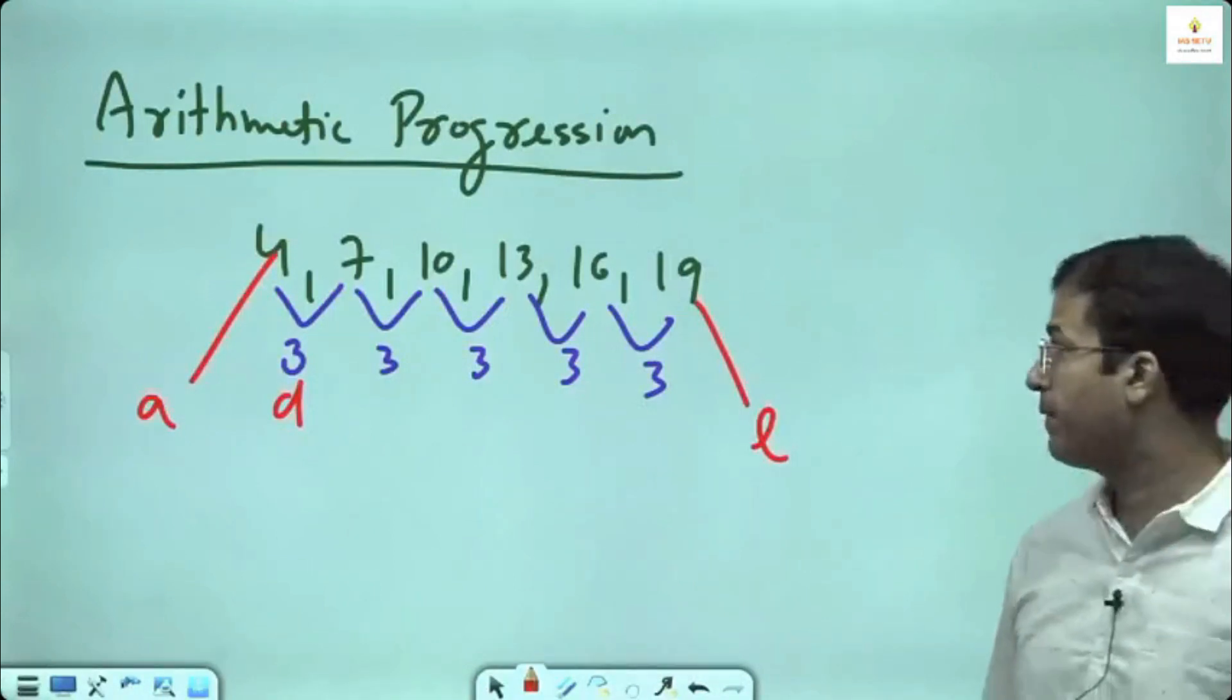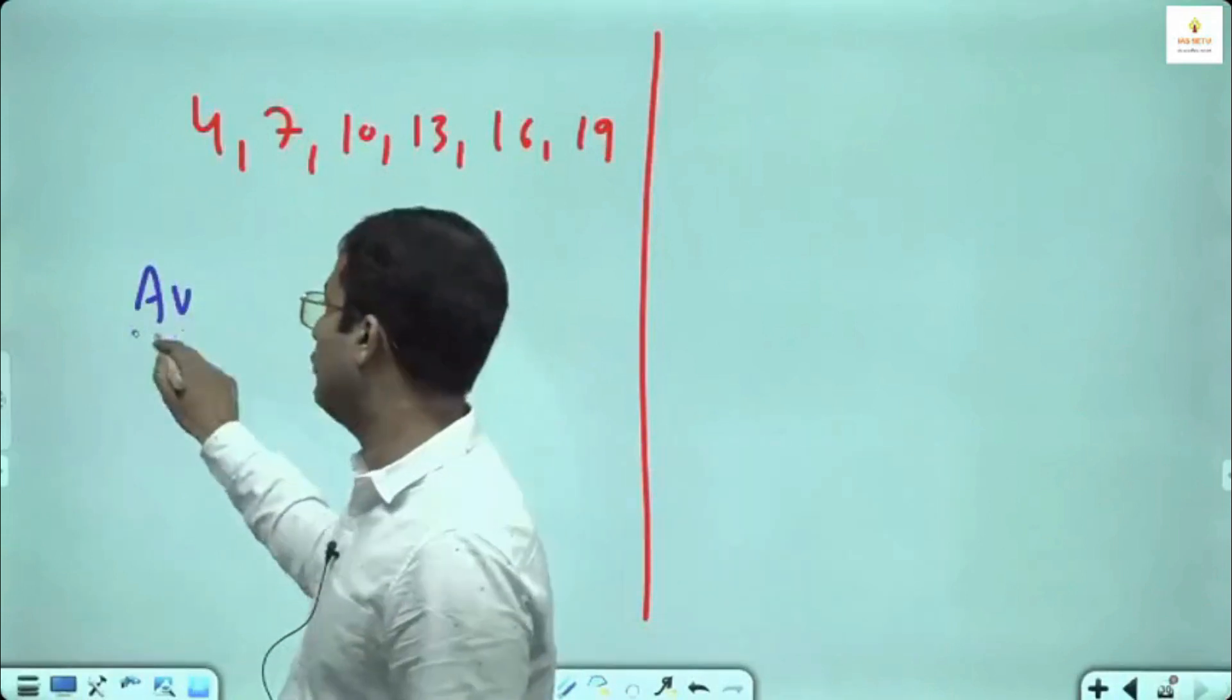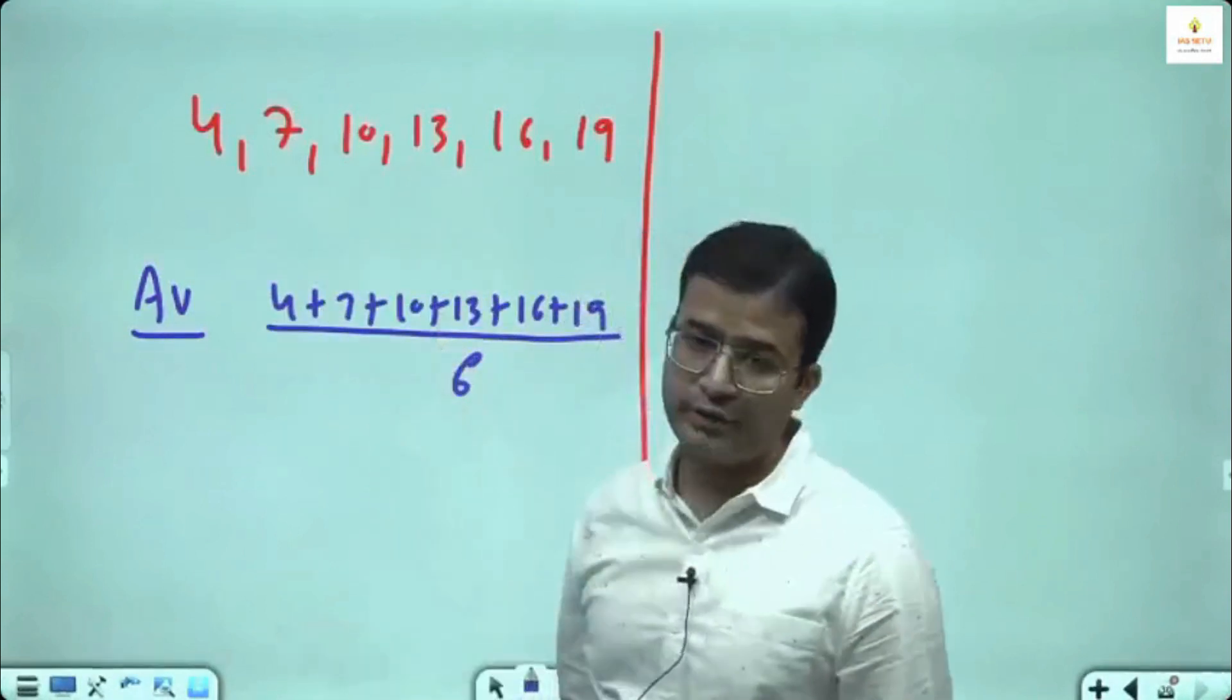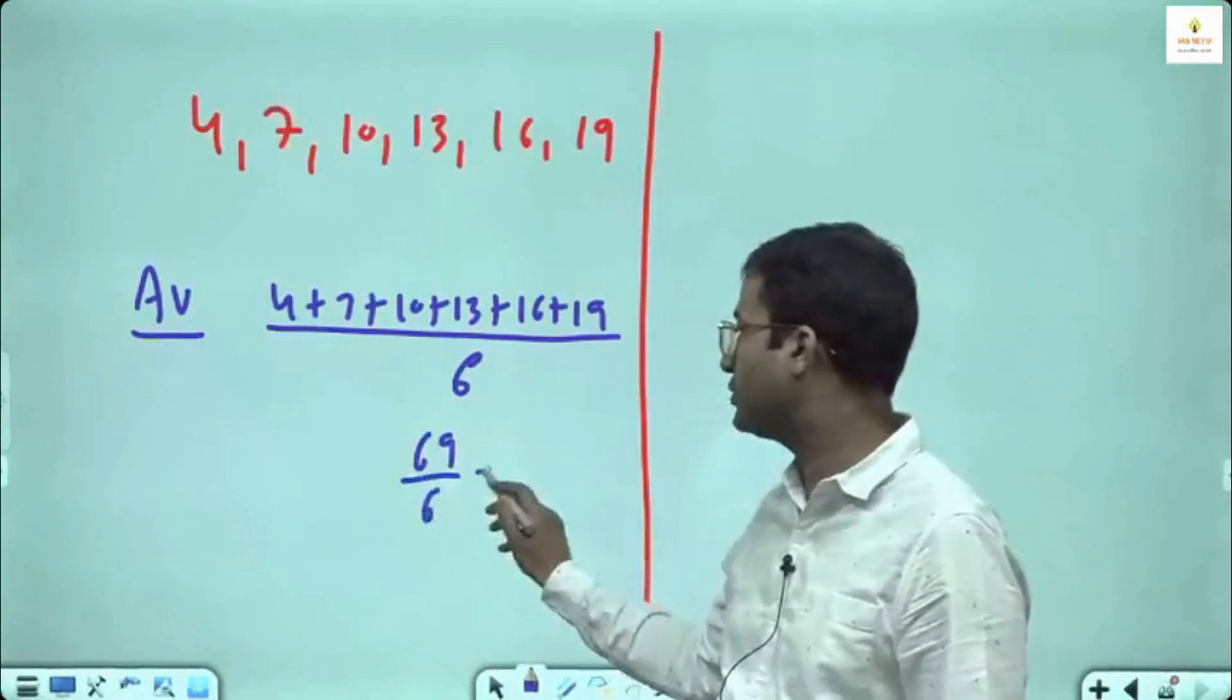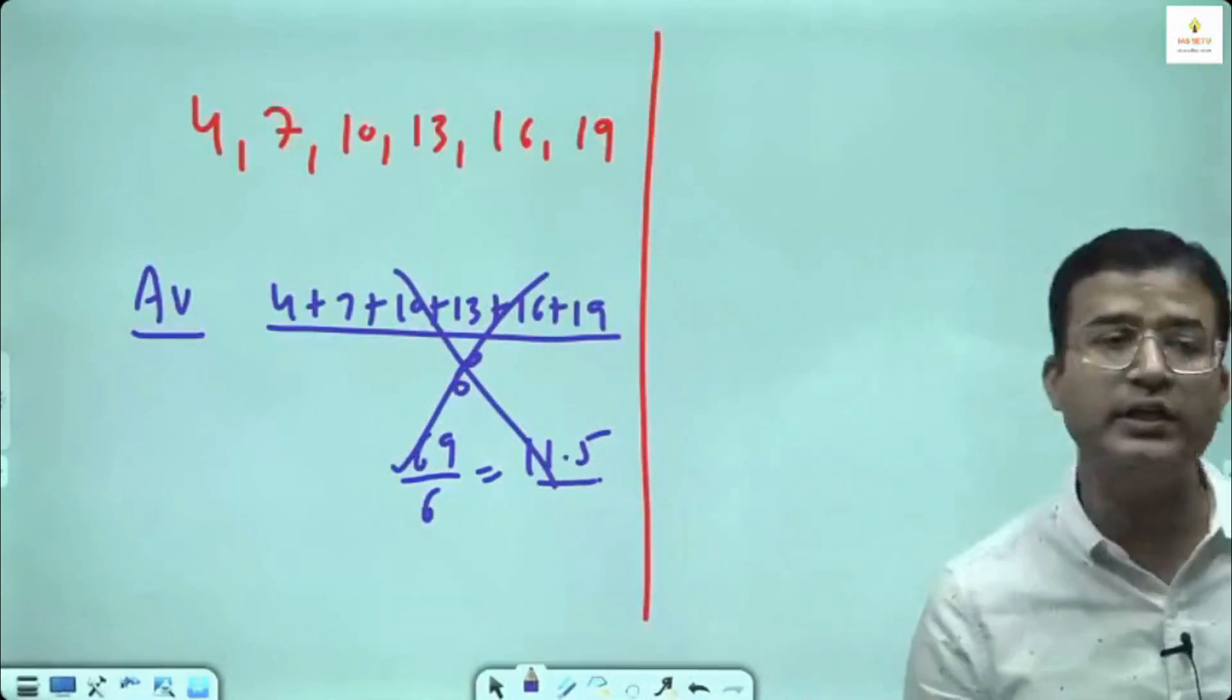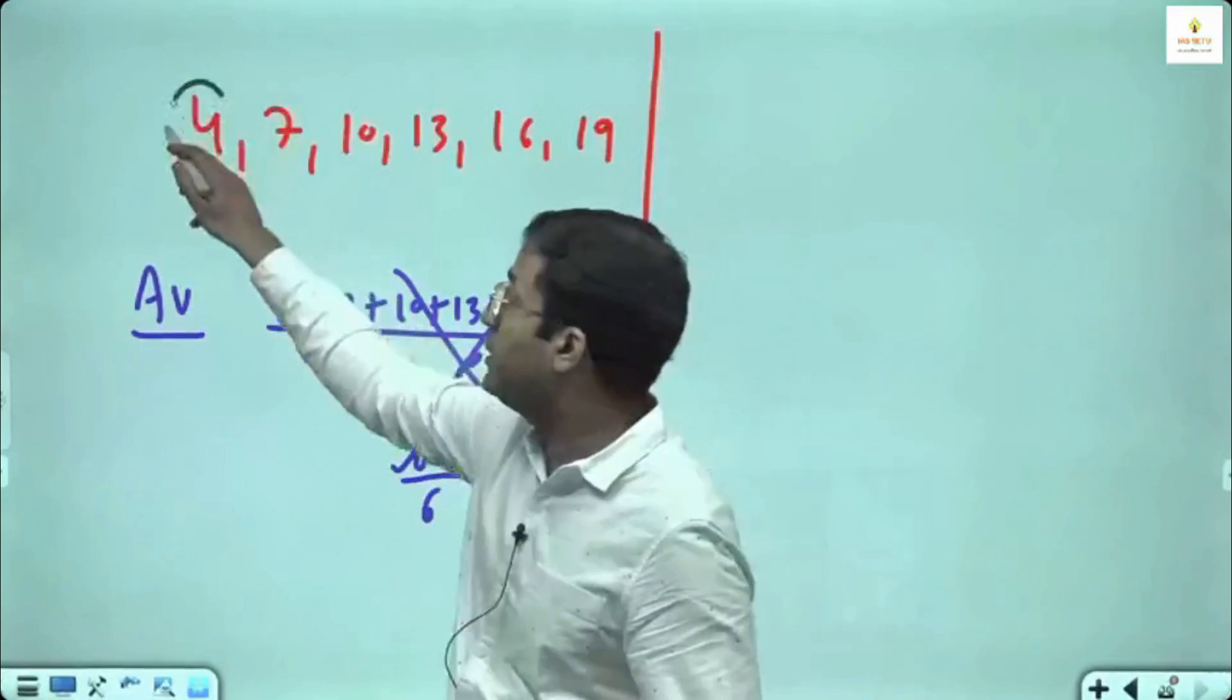My example is 4, 7, 10, 13, 16, 19. If you have to find average, one method is we add 4 plus 7 plus 10 plus 13 plus 16 plus 19. How many terms are there? 6. You divide by 6. It is 69 upon 6, coming 11.5. But here in arithmetic progression it is waste of time.